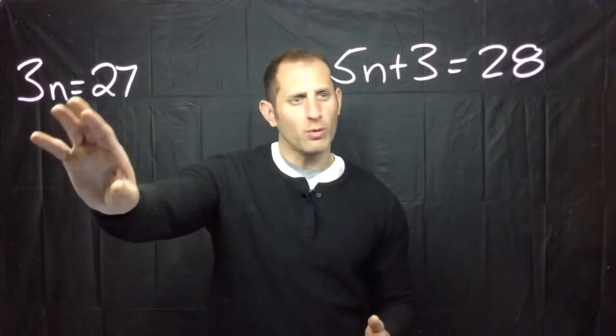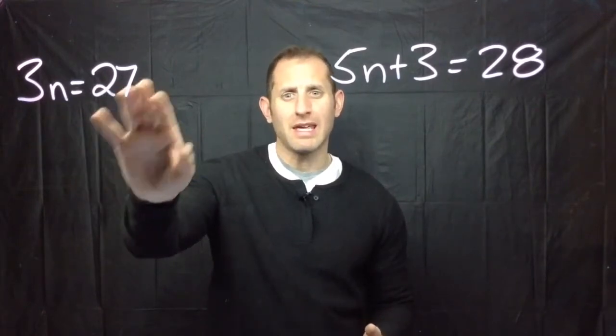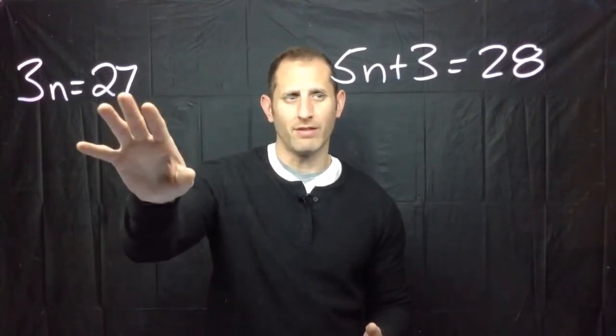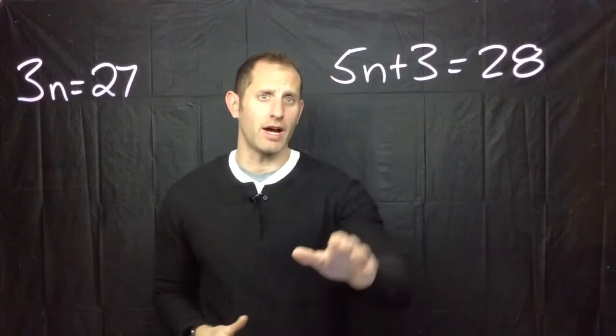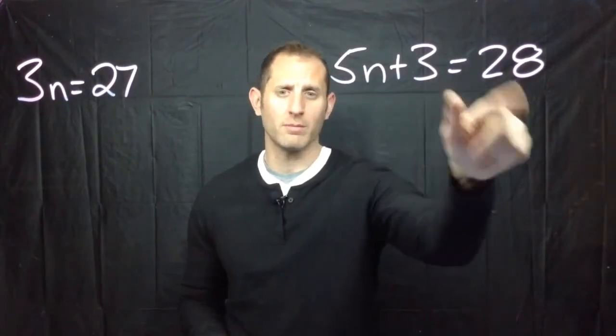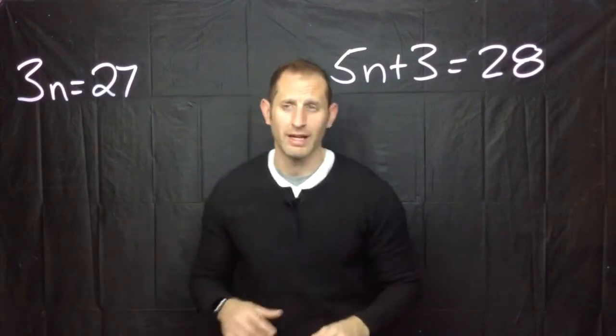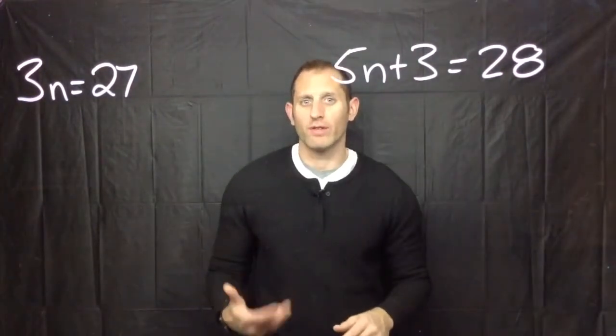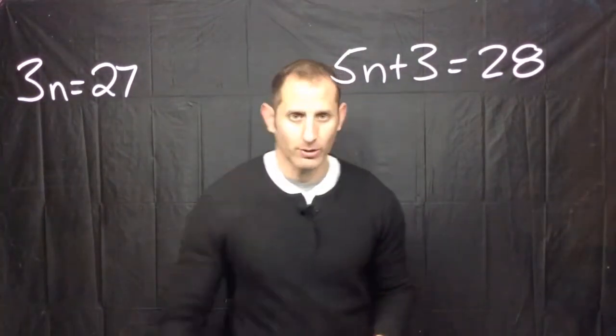Well this means that three groups of a number is going to be equal to 27 and if you take a look at the other side you've got five groups of a number plus 3 is going to be equal to 28 and that's going to play into how we solve these equations in just a second. So let's take a look.